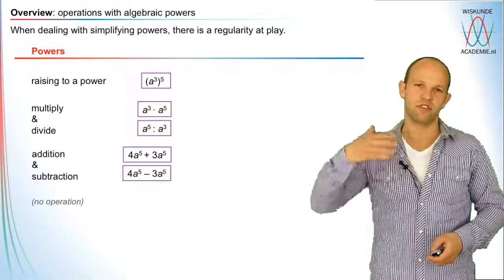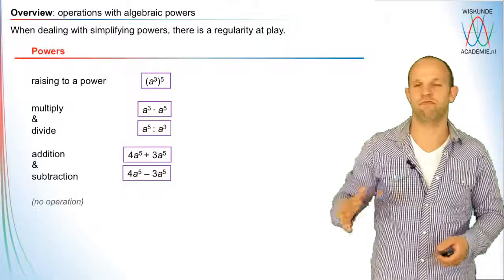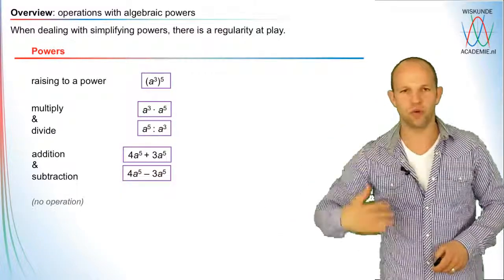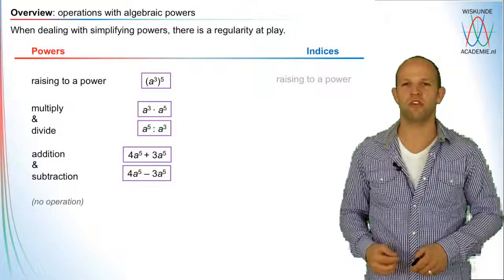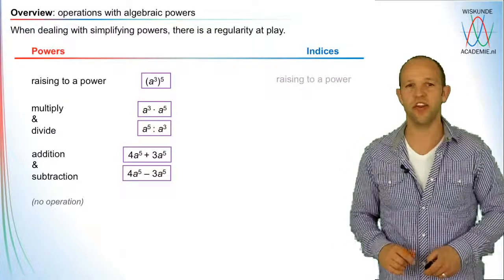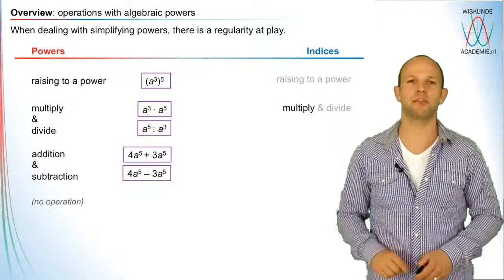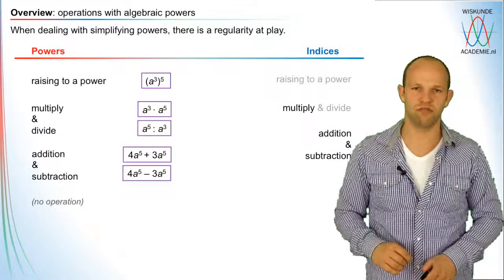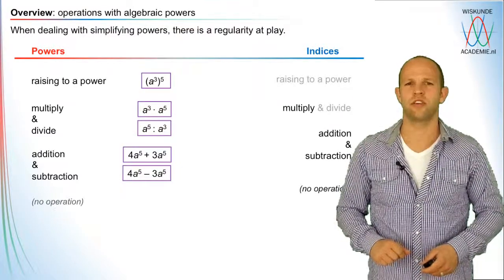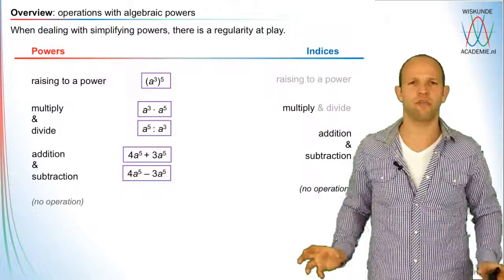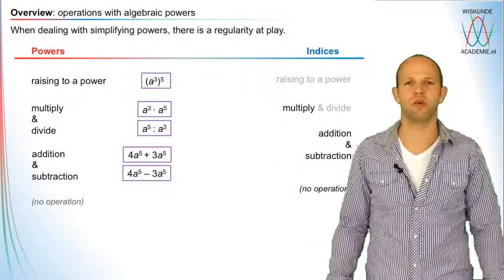In these steps there's the order of operations: raising to a power, multiplying and dividing, addition and subtraction, and afterwards nothing. Now the same order applies to the indices of the power. First, raising to a power of the indices — we're not going to use that, which is why it's shown in gray. Then multiplying and dividing of indices — dividing we haven't done yet, only multiplying. And then addition and subtraction of indices, and situations where you do nothing with the indices.